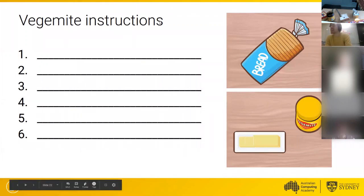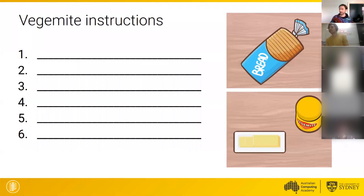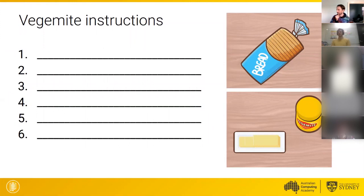Put your hand up or use the yes button in the participants window if you've done this activity in your classroom before or something similar. Hot chocolate, paper airplane, YouTube video — there are some great ideas coming in. This relates to algorithms in lots of different ways. What is a Vegemite sandwich? There was discussion about how much butter and Vegemite determines how you define a sandwich, and what order the instructions were in — could we put the Vegemite on first and then the butter?